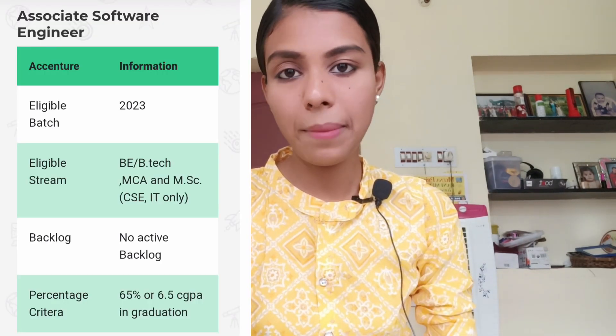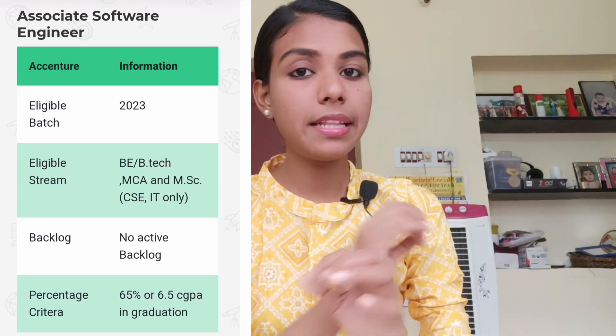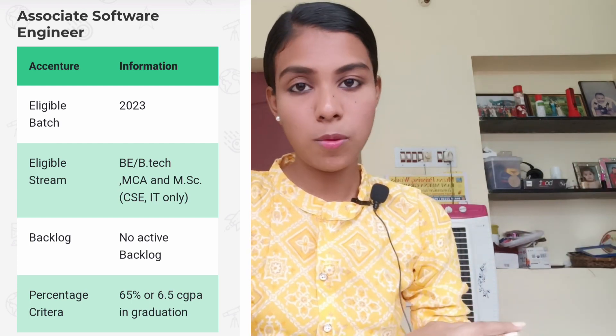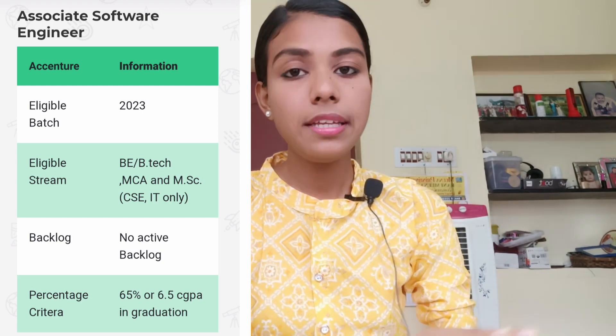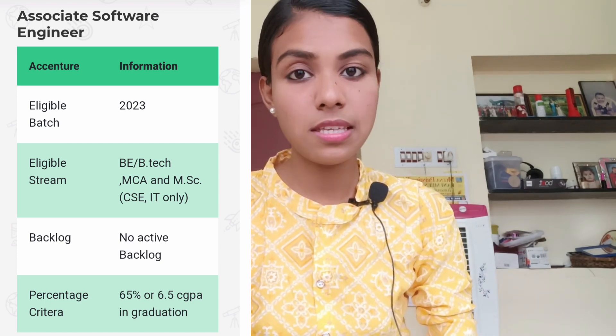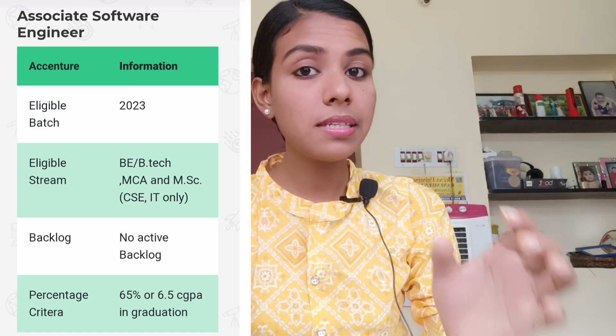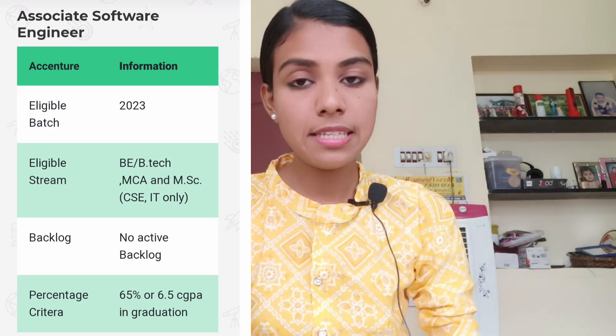If you are applying as a software engineer in the 2023 batch, first check the eligibility criteria. You should have a BE, MCA, or MSc degree — or similar graduation degrees — in IT or CSE. You also need a minimum of 65% CGPA, which is 6.5 on a 10-point scale. There should be no backlogs.